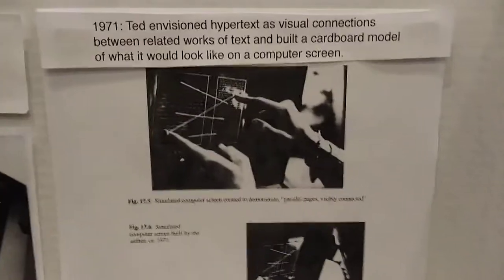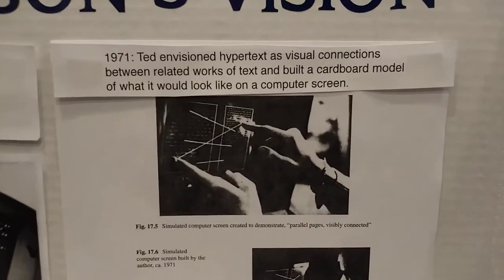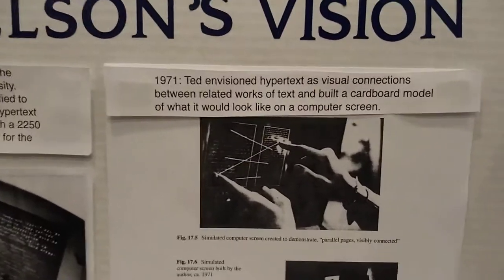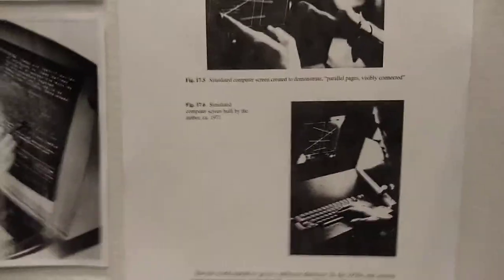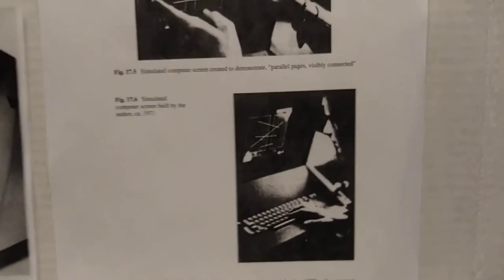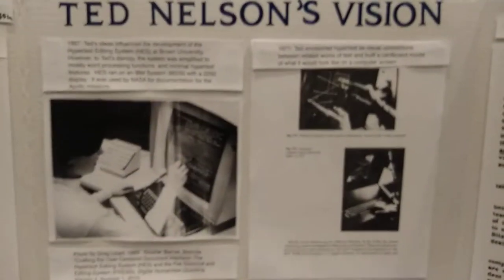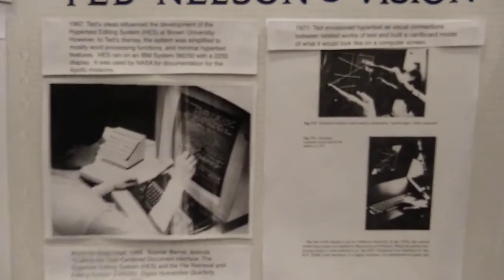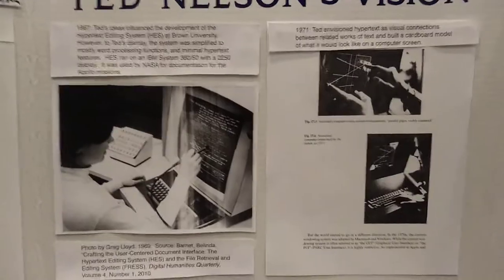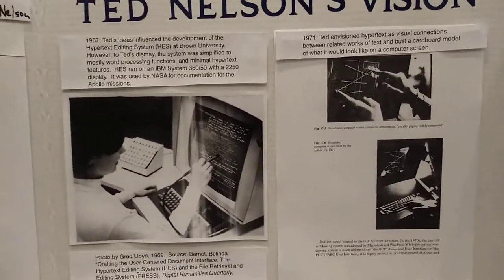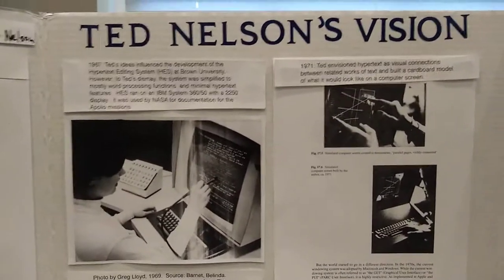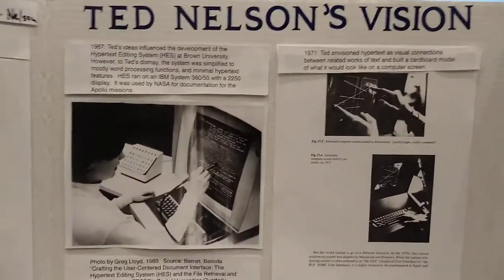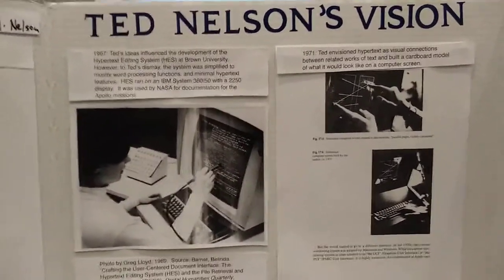On this side, I'm showing Ted's vision of hypertext as text in columns connected by bridges. He built a cardboard model of a computer screen to show what that would look like. This is an example of his visionary thinking from a literary perspective — like a researcher having to do all their footnotes. Wouldn't it be great if you could just go to that footnote and see what it says and the context in which it was said? Because that could really help discussions, discourse, and scholarly arguments.